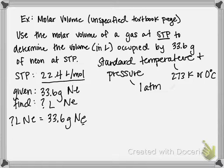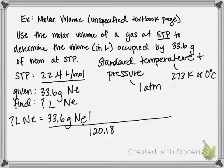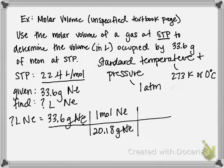To go from grams to moles, we need to divide by the molar mass. The molar mass of neon is 20.18 grams of neon contained in one mole, and I get that straight from the periodic table. That cancels out grams. Now I can utilize my molar volume at STP to cancel out moles and figure out the amount of liters in that particular gram amount.